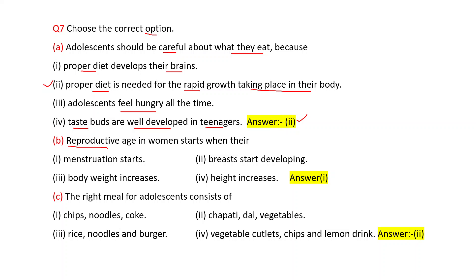Next MCQ: Reproductive age in women starts when — menstruation starts; breast starts developing; body weight increases; height increases. Correct answer is the first one: menstruation starts.